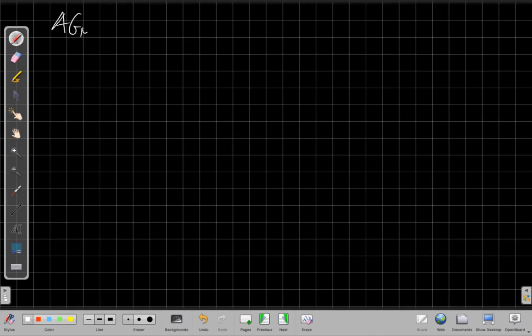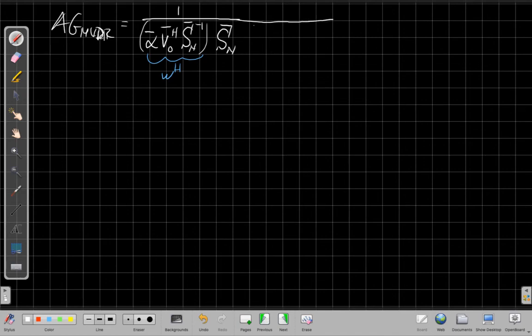So the array gain for the MBDR case will be 1 over W Hermitian, which is alpha bar times SN bar inverse. Oh, I should have the V naught first. Sorry. V naught Hermitian, SN bar inverse. So this is, this is W Hermitian, which is, again, this is, SN is a Hermitian matrix, so is its inverse, and so taking the Hermitian doesn't actually change SN inverse, it does change V naught. And alpha bar is real, so taking the conjugate doesn't matter. So I've got that W Hermitian times SN bar times W again, which will be alpha bar SN bar inverse V naught.